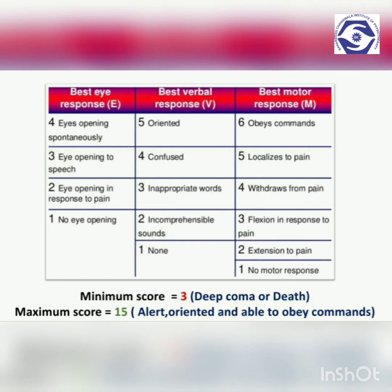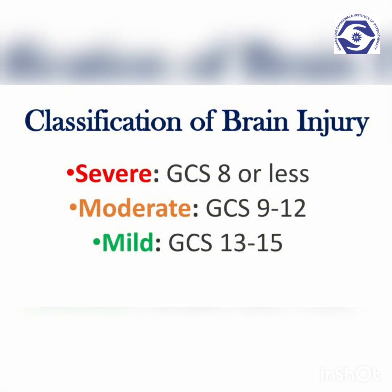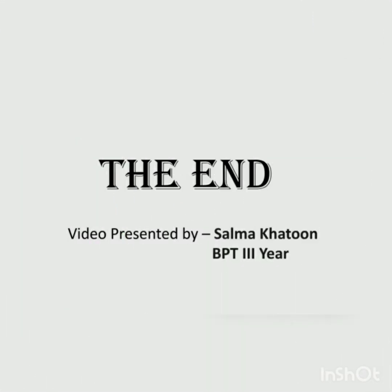Each parameter is assessed individually and the best response for each of the three components is recorded as a numerical score. The individual scores are then summed to give an overall score. A score of 15 is the maximum, indicating a patient is alert and oriented. A score of 3 is the minimum, indicating a patient is in deep coma or dead. Brain injury can be classified based on the GCS score: a GCS of 8 or less indicates severe brain damage; 9 to 12 indicates moderate brain damage; and 13 to 14 indicates minor damage.